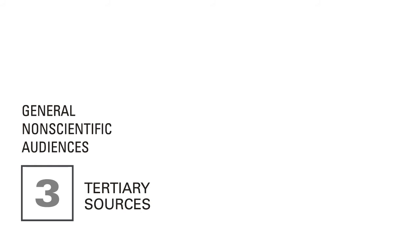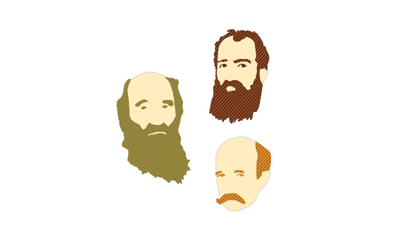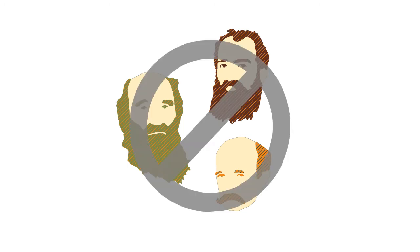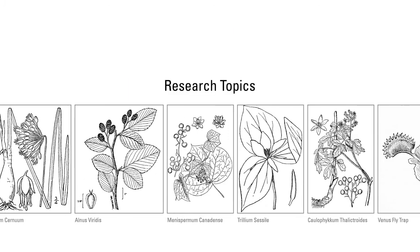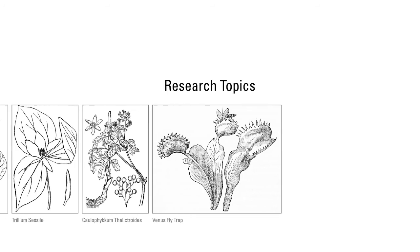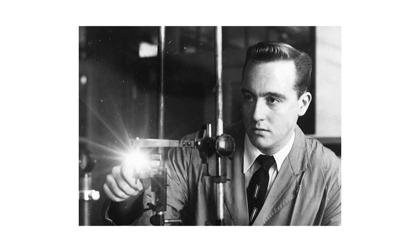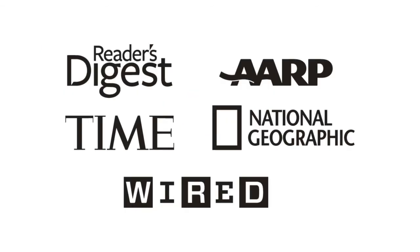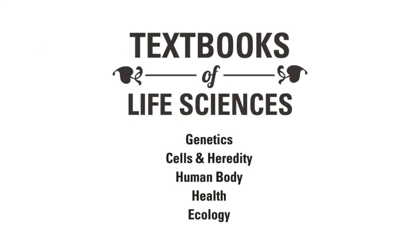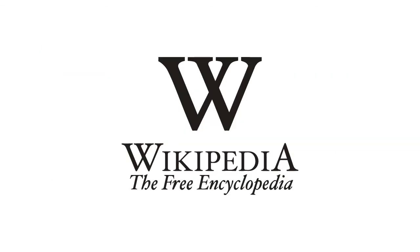A tertiary source is typically written for a more general, non-scientific audience. Unlike primary and secondary sources, tertiary sources do not go through a formal peer review process. Tertiary sources can sometimes be useful tools to discover new research topics. However, once you've picked a topic, make sure to use primary and secondary sources for your research. Some examples of tertiary sources include newspaper articles, popular magazines, textbooks, blogs, books, and Wikipedia articles.